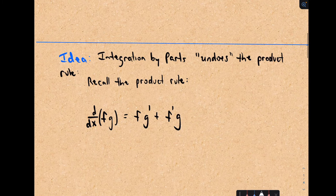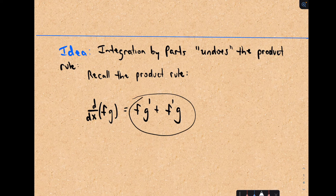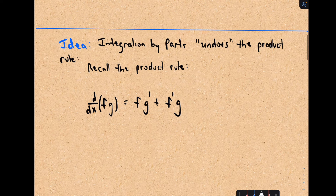So where does integration by parts come from? If you forget the formula you can always recall it if you remember that it undoes the product rule. Suppose you've got two functions f times g and you take the derivative of f times g. By the product rule it says we get f times g prime plus f prime times g. The idea is you could integrate both sides, and if things are separated by a plus or minus you just integrate those a piece at a time.